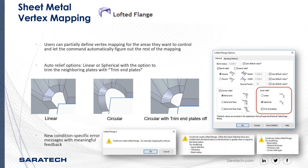The user can partially define the vertex mapping for the areas they want to control and let the command automatically figure out the rest. You can see the auto release option on the right-hand side — linear and spherical. The different options show what linear, circular, and circular with trim look like. With plates off you can see it goes right to the point without trimming, and with the trim check mark on it gives you the trimmed result.